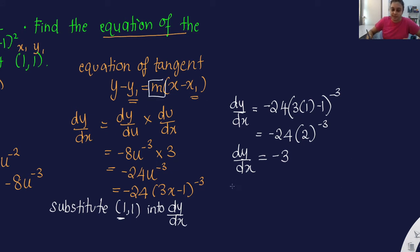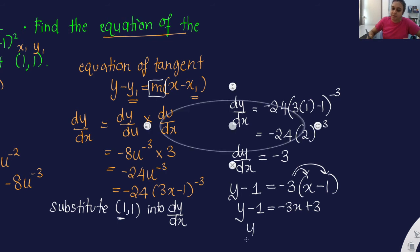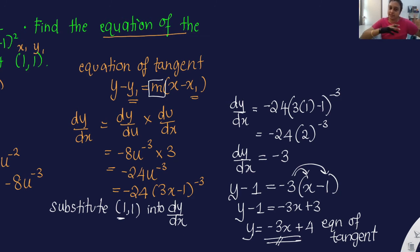So our final equation of tangent will be: y minus 1 equals negative 3 times (x minus 1) — we use y1 equals 1 because the point is (1, 1). Expanding: y minus 1 equals negative 3x plus 3. Bringing negative 1 to the right: y equals negative 3x plus 4. So this is our final equation of tangent. It's quite simple — you just need to find the gradient and apply the point.